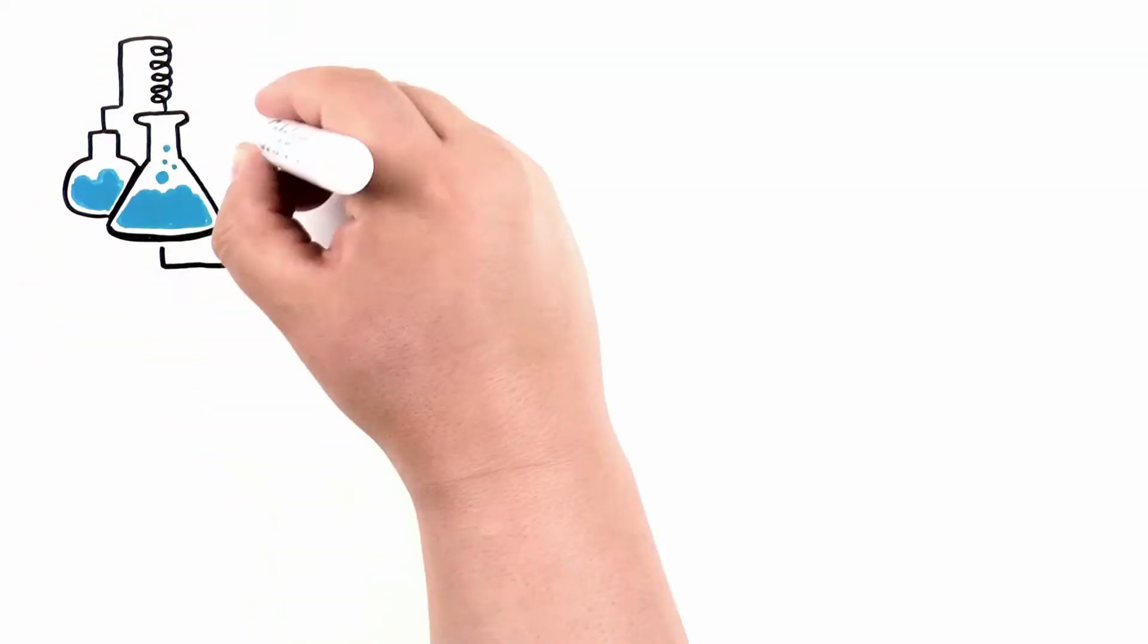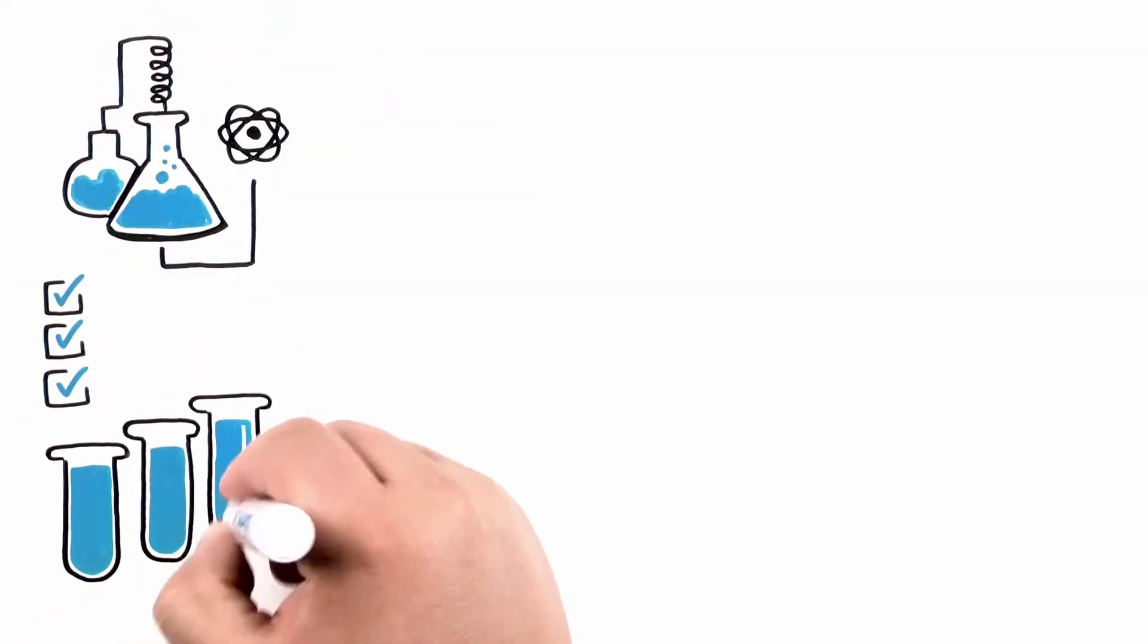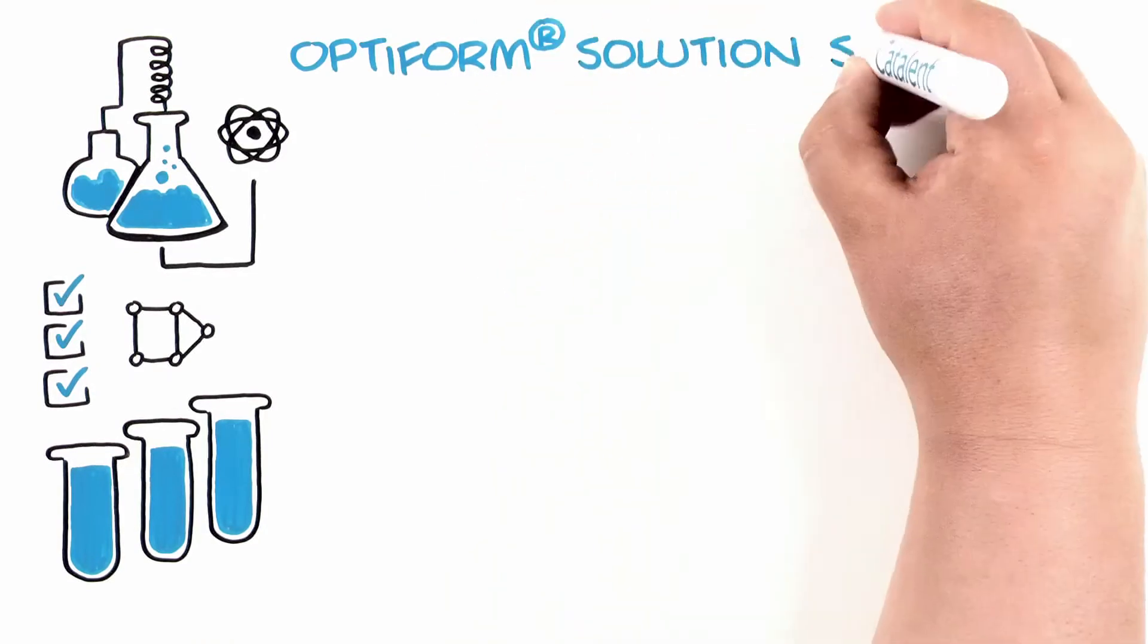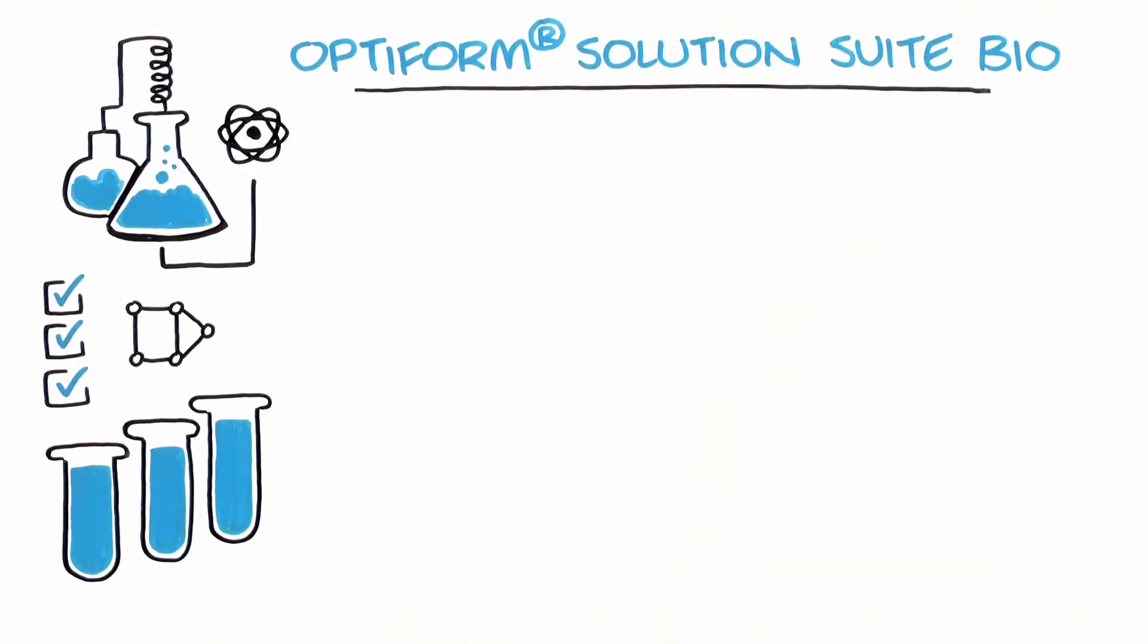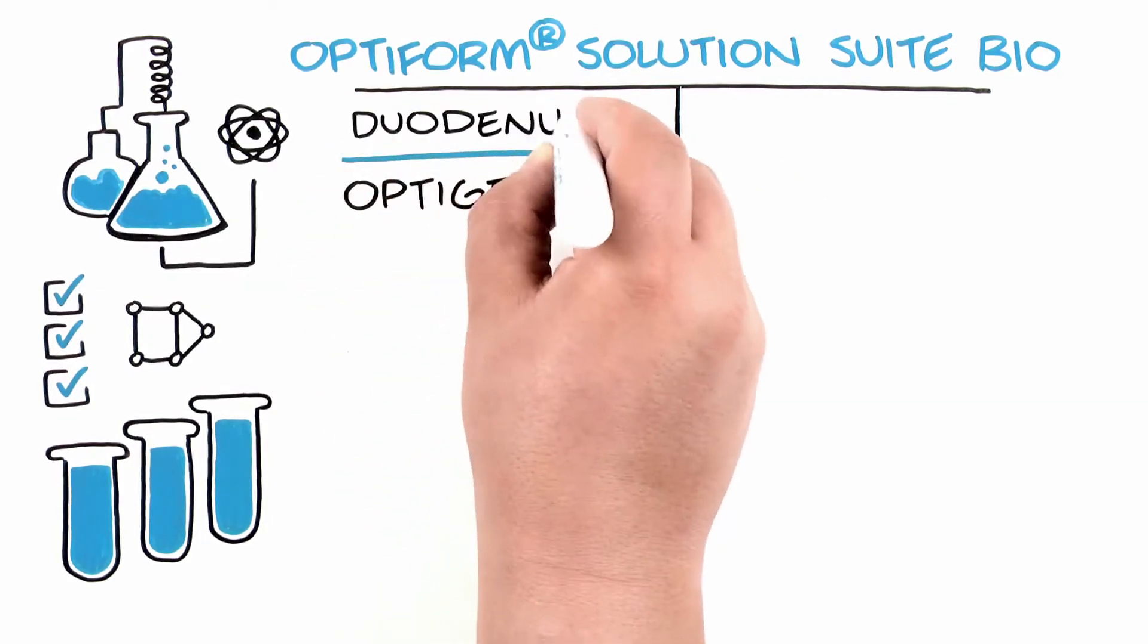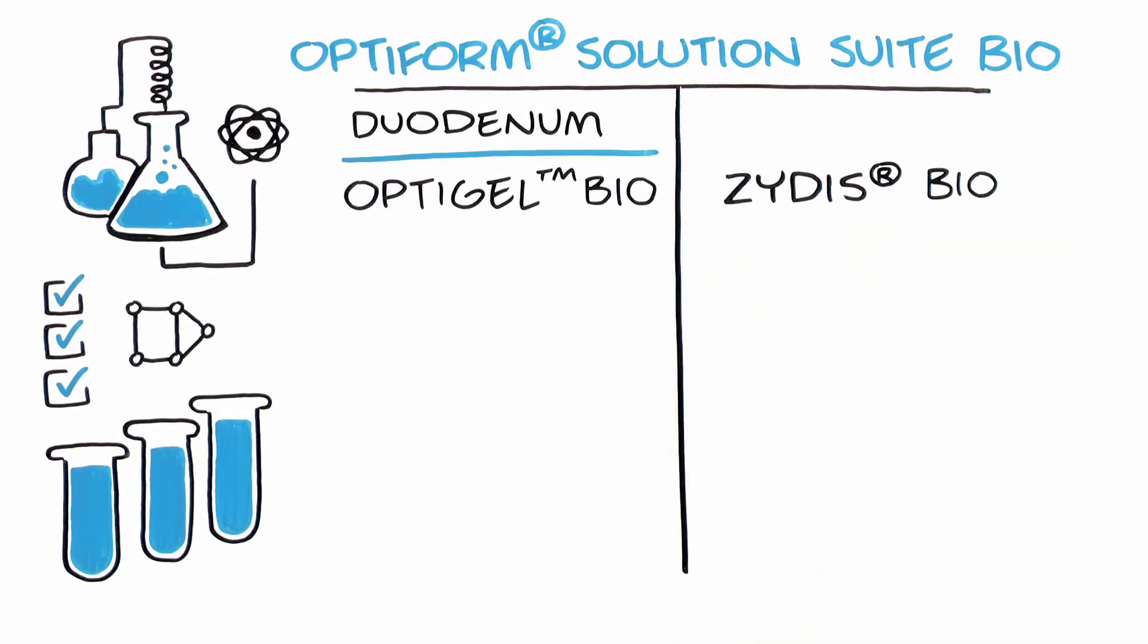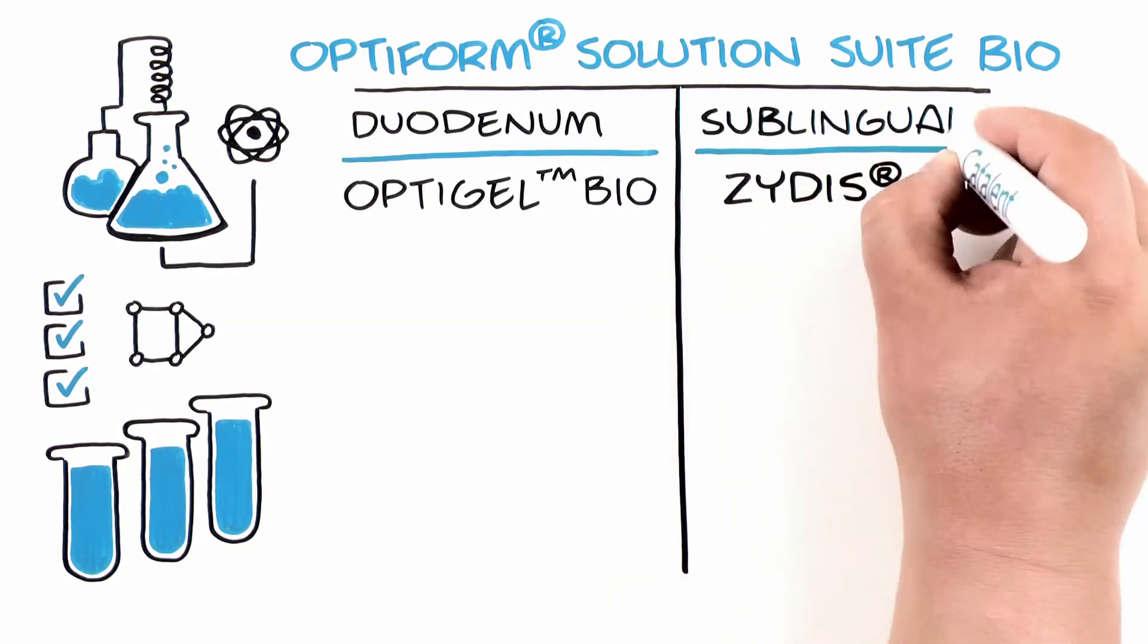Based on rigorous science and best-in-class formulation expertise, Catalent's OptiForm Solution Suite Bio applies a parallel screening approach built on two technologies to address these barriers: OptiGel Bio technology to target the duodenal barrier and Zydis Bio technology to target the sublingual barrier.